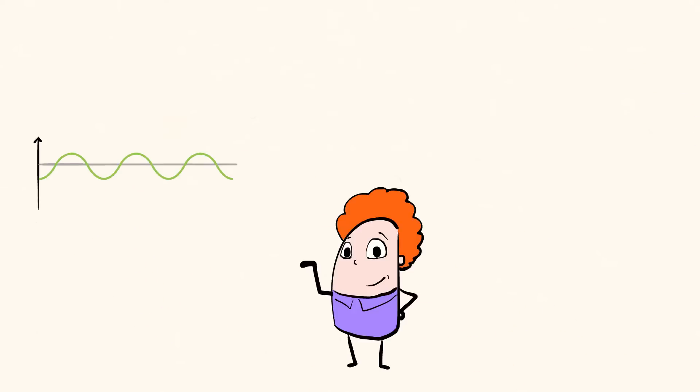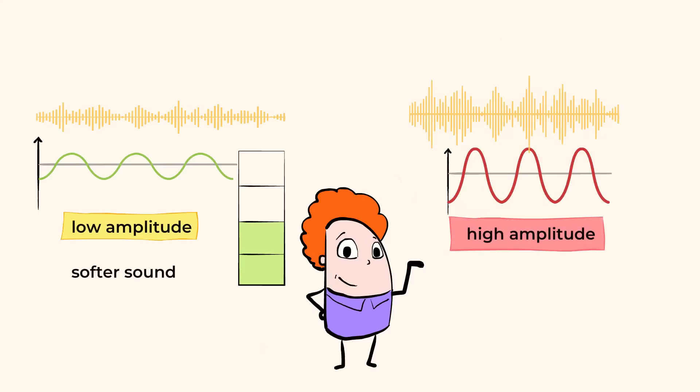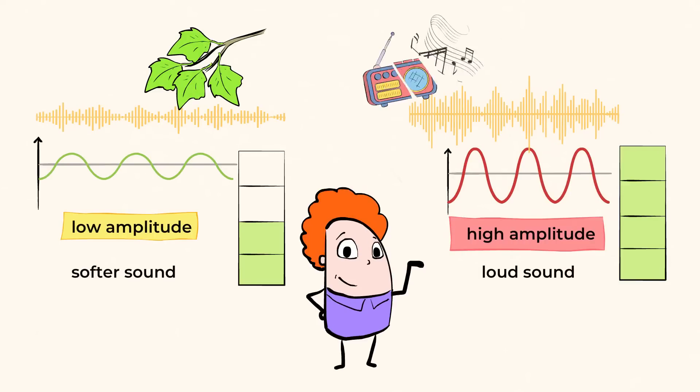Sound waves with low amplitude make softer sounds, while sound waves with a higher amplitude make louder sounds. So, leaves rustling in the wind would have a very low amplitude, but loud music would have a high amplitude.